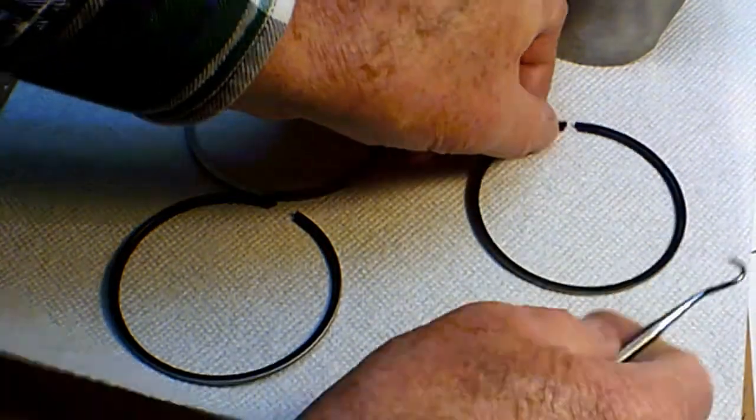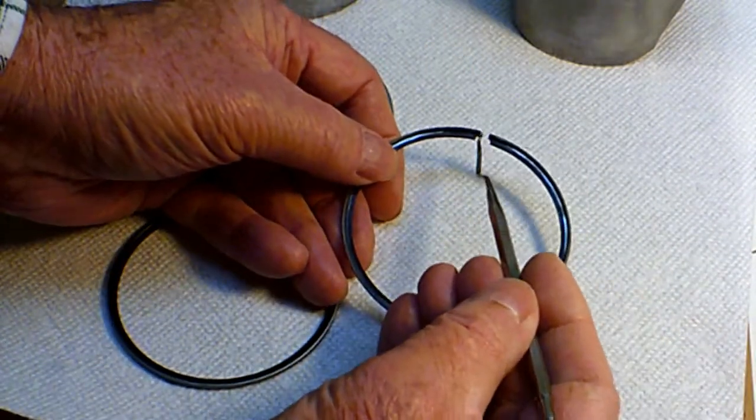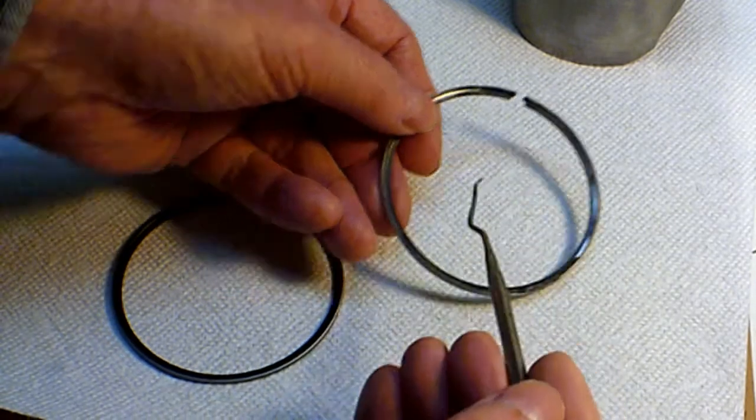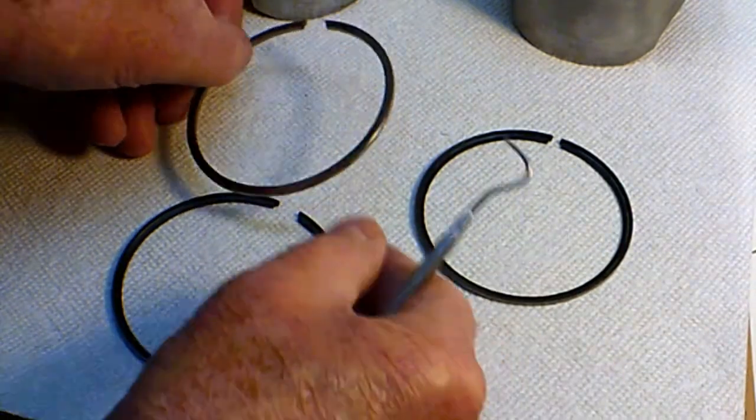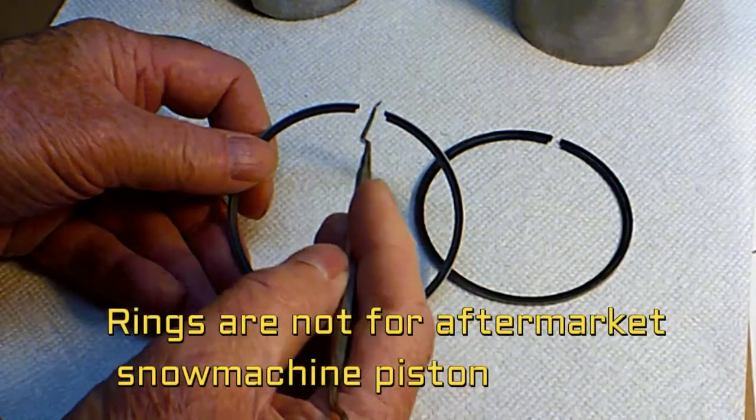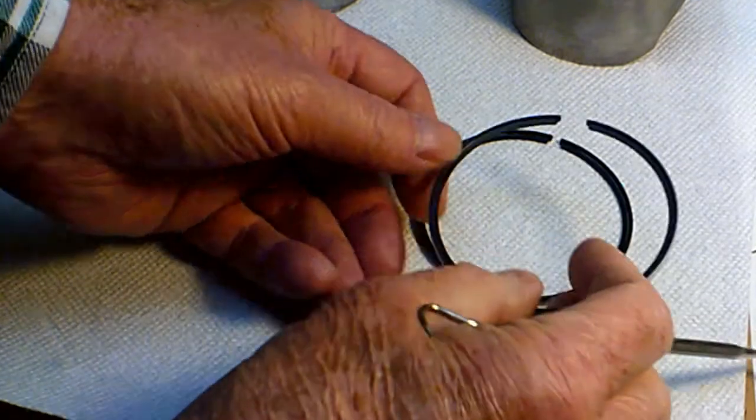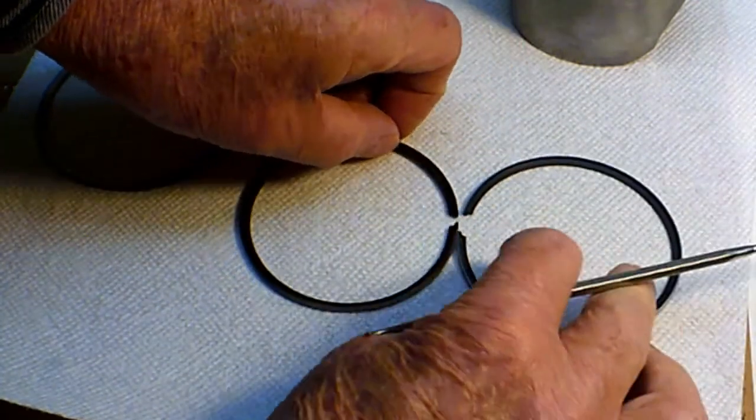This is the top ring that came off. You can see what this gap is in here on the piston ring. Now this is one that I bought that's new and you'll notice the gap is quite a bit larger here. I'll put them like this so you can see the difference.